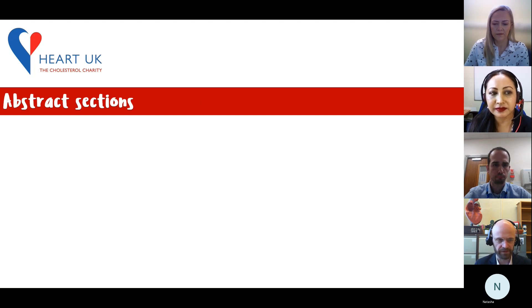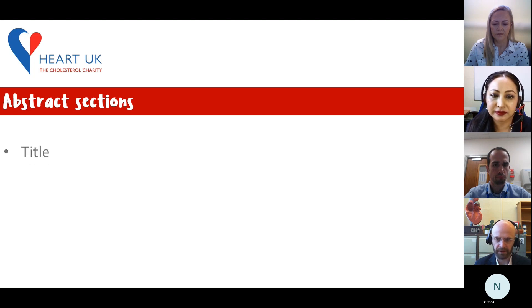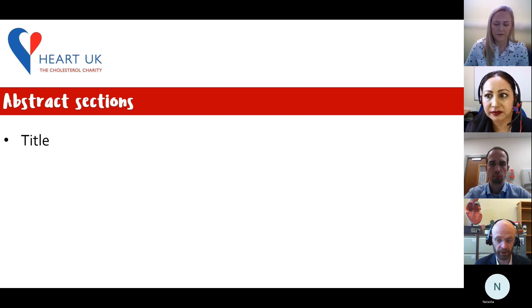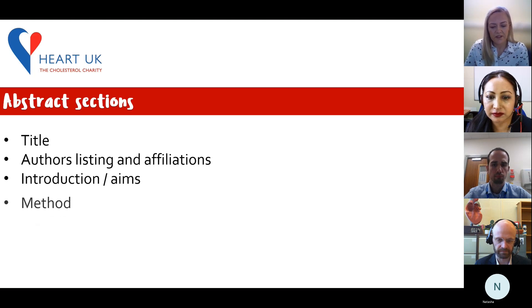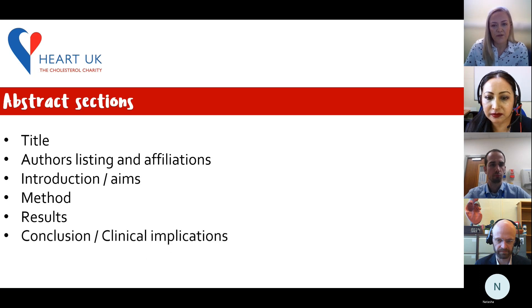So what sections should you have in the abstract? Conference abstracts have a defined structure that is similar to abstracts for scientific articles. This will typically have an introduction, an objective, methods, results and conclusions. However, conference abstracts are not presented as part of a full article and therefore must only contain the necessary and most relevant data.